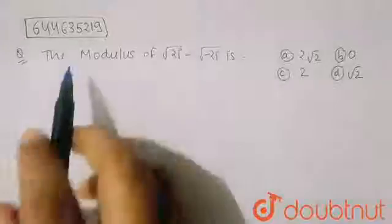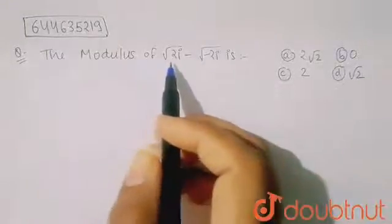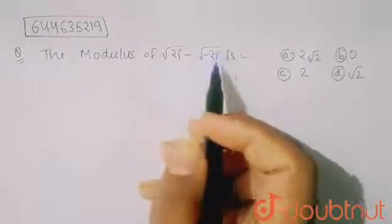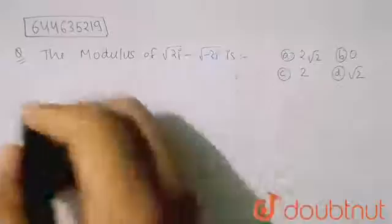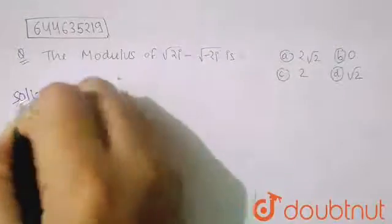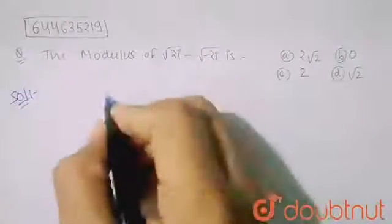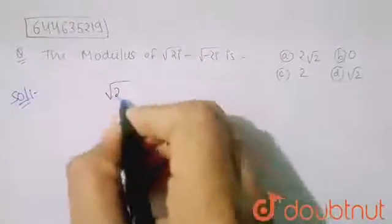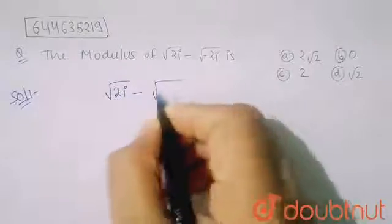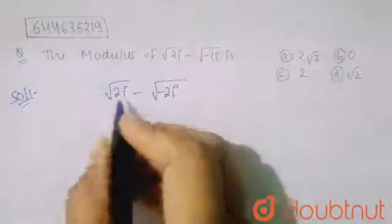It is given to find the modulus of √(2i) − √(−2i). We have to find its value. So what is given is √(2i) − √(−2i).